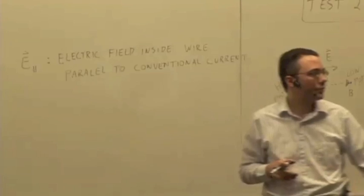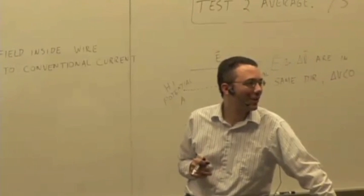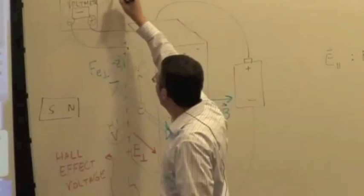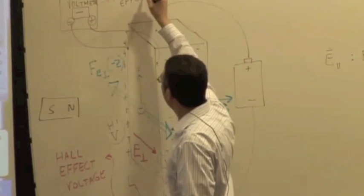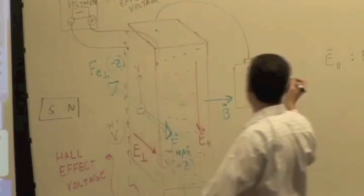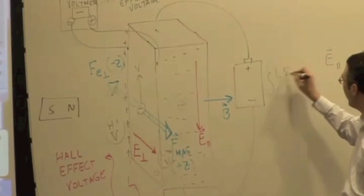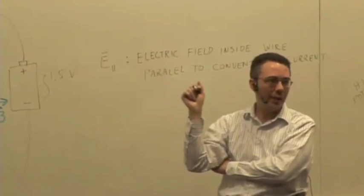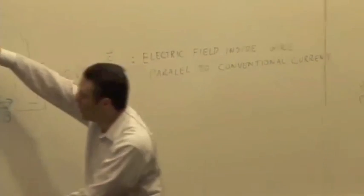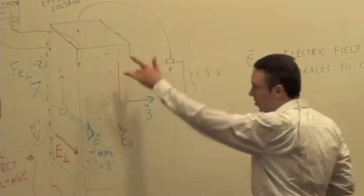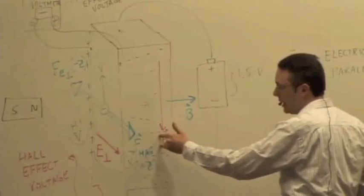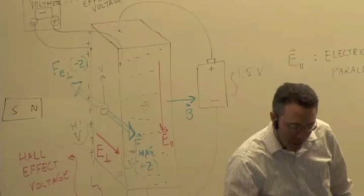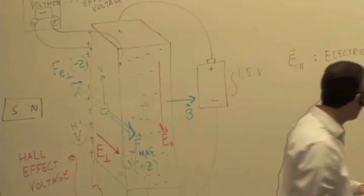This is called the Hall effect voltage. Now let's say the EMF of the battery is our typical 1.5 volt battery. Does that mean it's going to read negative 1.5 volts? No. The 1.5 volts is the potential difference connected from one end to the other — that's a different potential difference than the perpendicular one. The parallel one has to do with E parallel; this perpendicular one has to do with E perpendicular. The question was asked: does it matter what the sign of the charge carriers is? That's our next question to answer.